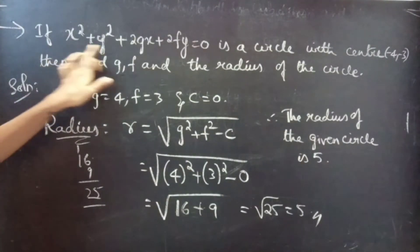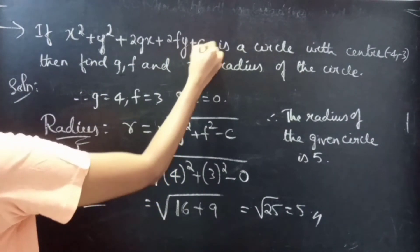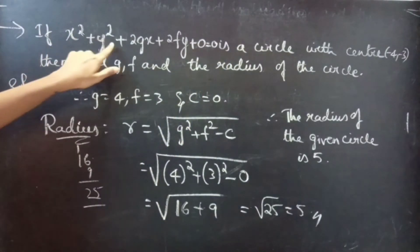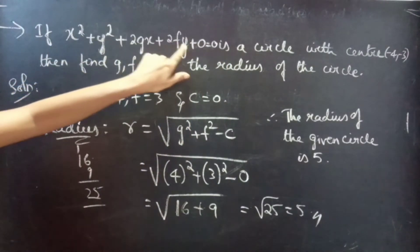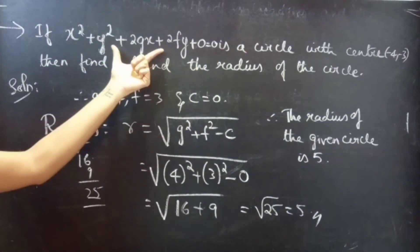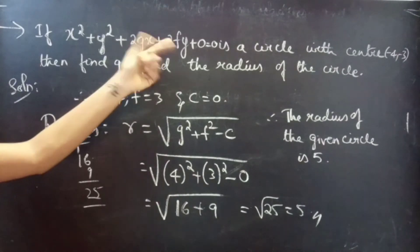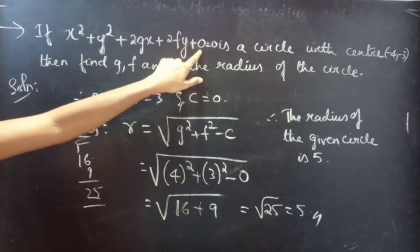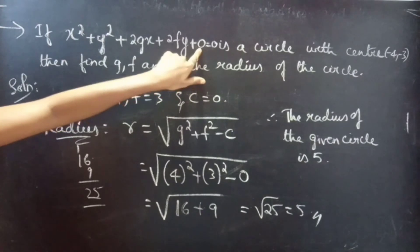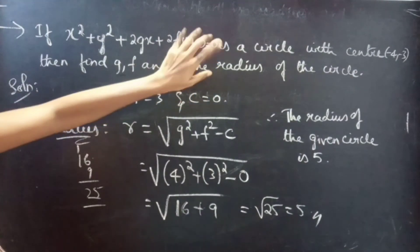If you want, you can write this equation as x squared plus y squared plus 2gx plus 2fy plus 0 equals to 0, in order to compare the given equation with the circle equation in standard form and to find the value of c. For our convenience, we can write the equation like this.